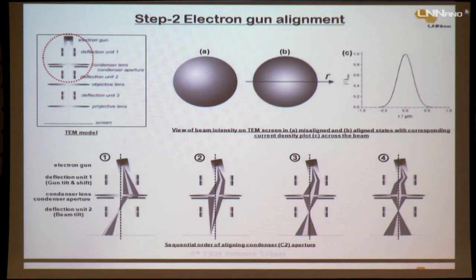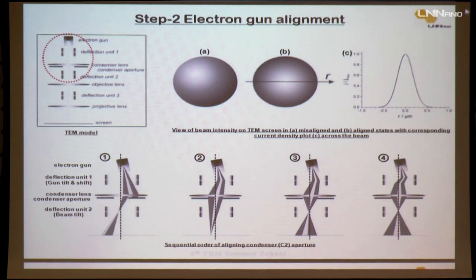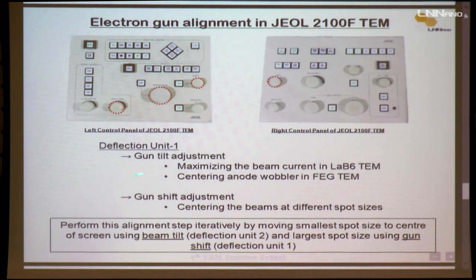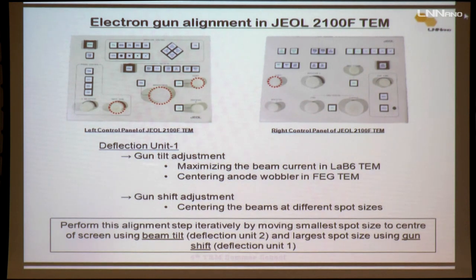We also need to center the beam for different spot sizes. This is common for both microscopes. The gun tilt adjustment step is slightly different for FEG and LaB6 machines. For different spot sizes, we need to perform the centering cyclically — changing spot size from one (biggest) to five (smallest) and making sure there is no movement when changing the spot size. I can demonstrate this in the demo session.